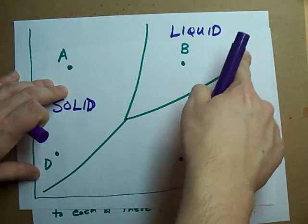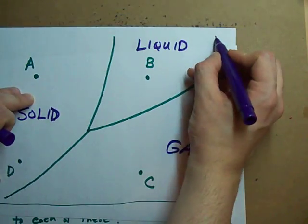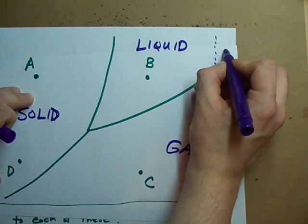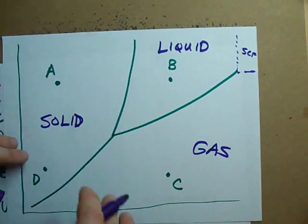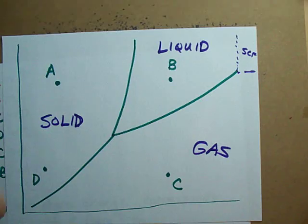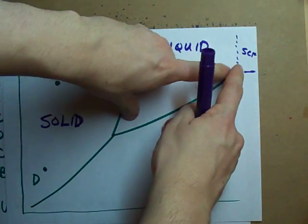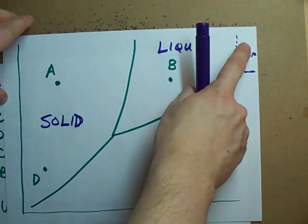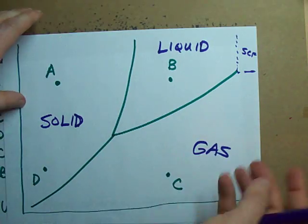This up here, beyond the critical point, I guess I'll draw a box for you. This is supercritical fluid. It's not going to play a role in the question I'm giving you, but if you're curious, any temperature pressure combination up here makes it something called a supercritical fluid.